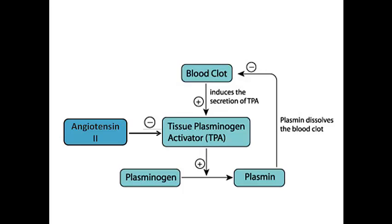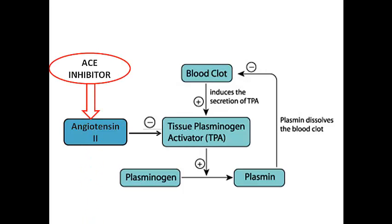Angiotensin II also has a role in inhibiting the production of tissue plasminogen activator, or TPA, thus inhibiting the conversion of plasminogen to plasmin for fibrinolysis. Conversely, if an ACE inhibitor is present, the production of plasmin proceeds, and blood clots are dissolved. So ACE inhibitors are not only used clinically as antihypertensives, but they can also be used to prevent the formation of blood clots.